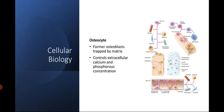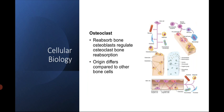The next cell is the osteocyte — former osteoblasts trapped in matrix — and they are important for extracellular calcium and phosphorus concentration. Next we have osteoclasts, which, compared to osteoblasts and osteocytes, originate from myeloid hematopoietic cells — from the monocyte or macrophage cell lineage. These monocyte progenitors fuse together to form a mature multinucleated cell.